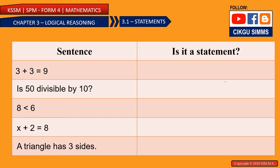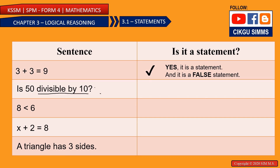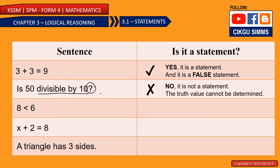Let's see these five examples — you can pause the video and try. First: '3 plus 3 equals 9.' You know that 3 plus 3 equals 6, so this is wrong, but it is a statement — a false statement. Second: 'Is 50 divisible by 10?' This is a question, so it is not a statement because you don't know if this sentence is true or false.